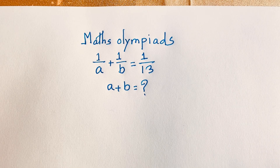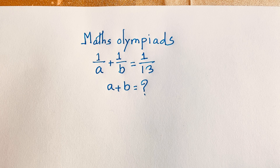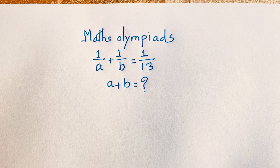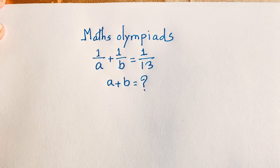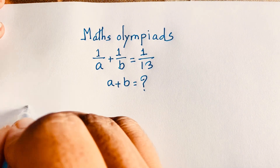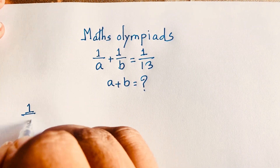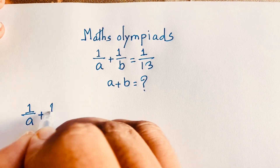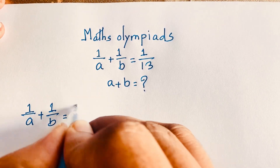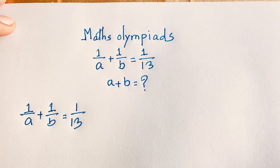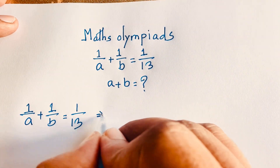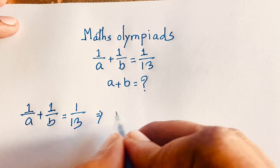Hello everyone. In this video we have solved this interesting math olympiad question. The question is: 1 over a plus 1 over b is equal to 1 over 13. And a plus b is equal to what? So our question is 1 over a plus 1 over b equals 1 over 13.